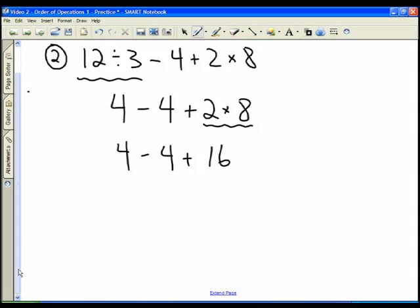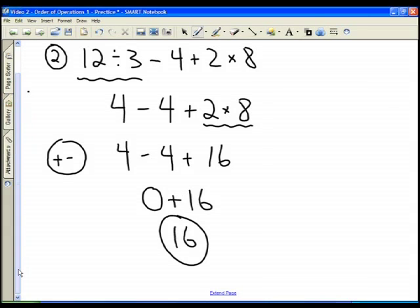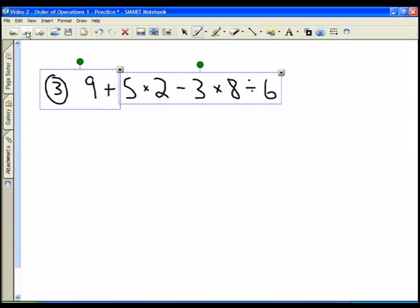Now I have only addition and subtraction left. It doesn't really matter the order that you do the addition and subtraction, but I usually do them from left to right. 4 take away 4 is 0, and then 0 plus 16 is of course 16. So 16 is the correct answer to the second problem.